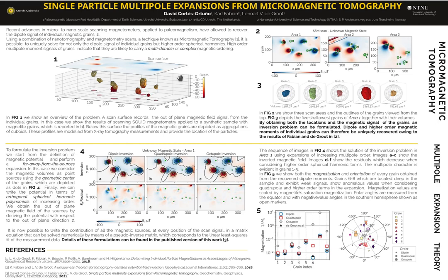In micromagnetic tomography we combine magnetometry and tomography to obtain the magnetic signal and the position of the grains. Using this information we formulate the problem theoretically using multipole expansions and potential theory to invert the signal of the grains.